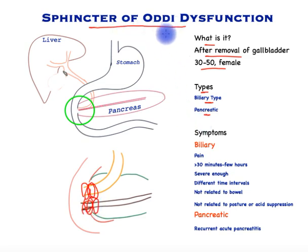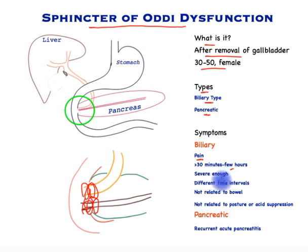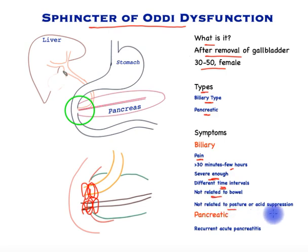To be able to diagnose this condition, the symptoms have been very precisely defined. Specifically, it has to be biliary type pain — pain below the right side rib cage that is greater than 30 minutes and may last up to a few hours. This occurs on more than one occasion spread apart from each other. It is severe enough to stop patients doing what they are doing and sometimes these patients may end up in hospital. It occurs at different time intervals and is not related to bowel movements.